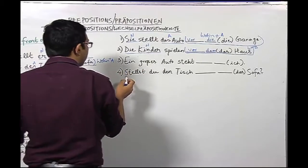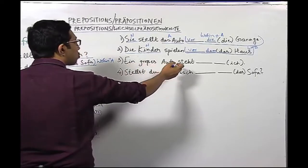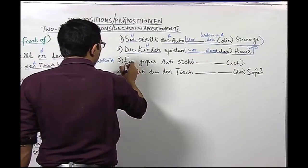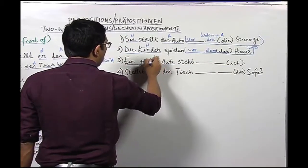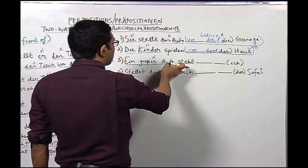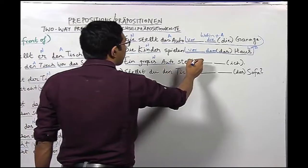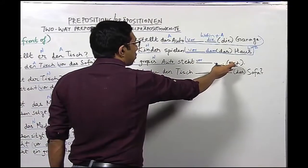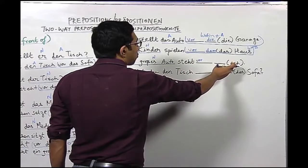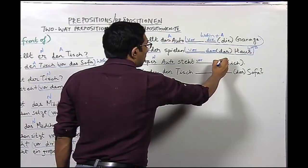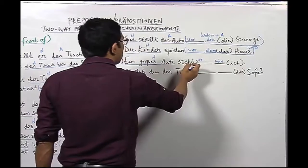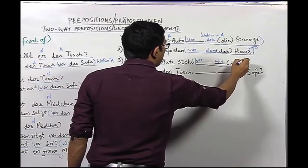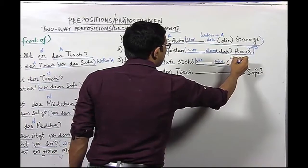Sentence number three: Ein großes Auto steht vor mir. Mark the nouns: 'ein großes Auto' is the subject. The verb 'stehen' is a dative verb, so we use 'vor' as a dative preposition. We need the dative form of the personal pronoun 'ich', which is 'mir'. So: Ein großes Auto steht vor mir. This answers the question 'Wer steht vor dir?' in dative.